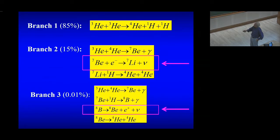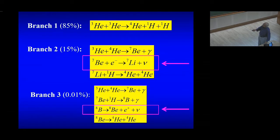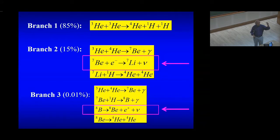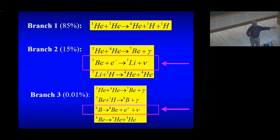This proton-proton chain reaction accounts for 85% of the energy production in the sun. There is another branch contributing roughly 15%. I want to draw your attention to the fact that there is a reaction where beryllium-7 combines with an electron to produce lithium-7 and an electron neutrino. Similarly, there is an even less probable channel in which boron-8 decays to beryllium-8, producing a neutrino. So there are three chemical reactions in the center of the sun that produce electron neutrinos, but the most important is the proton-proton chain.